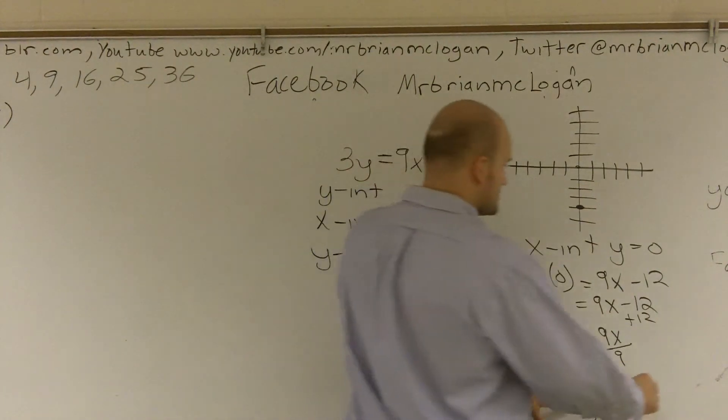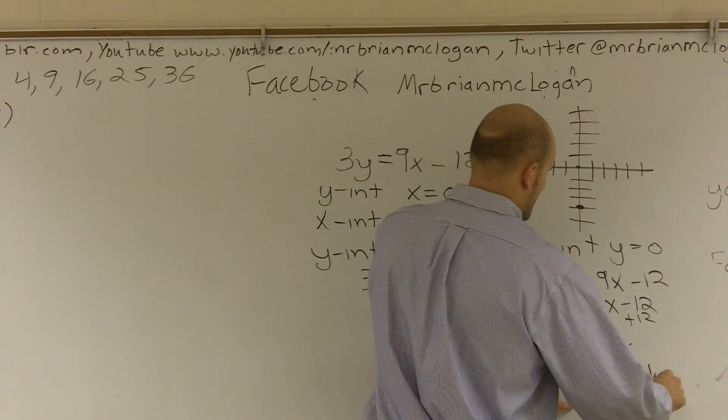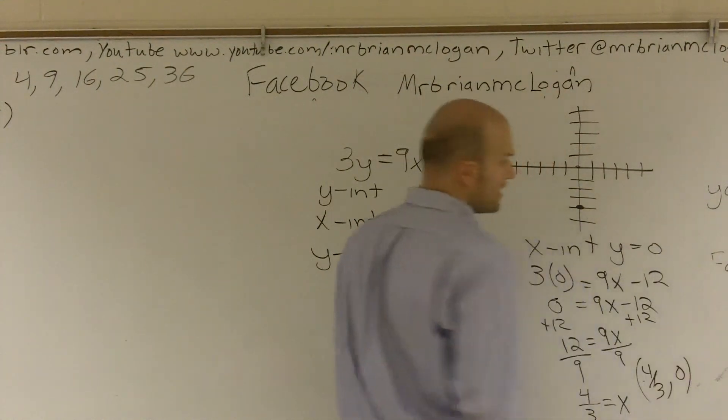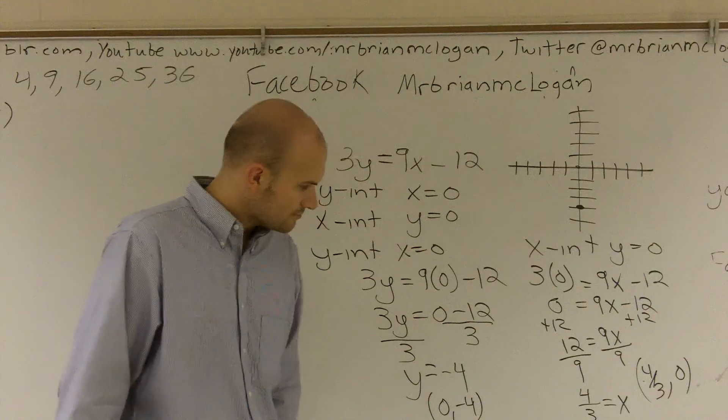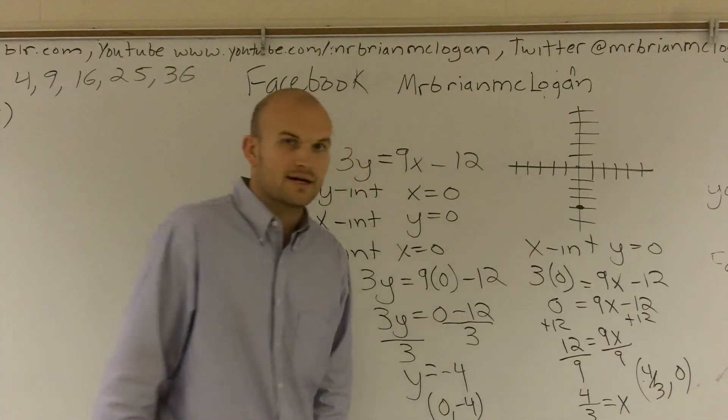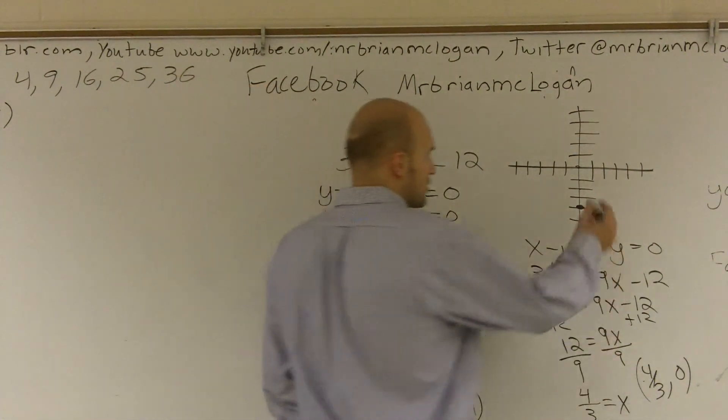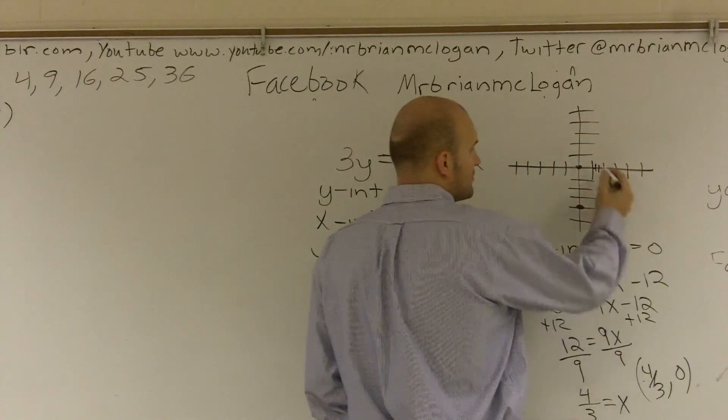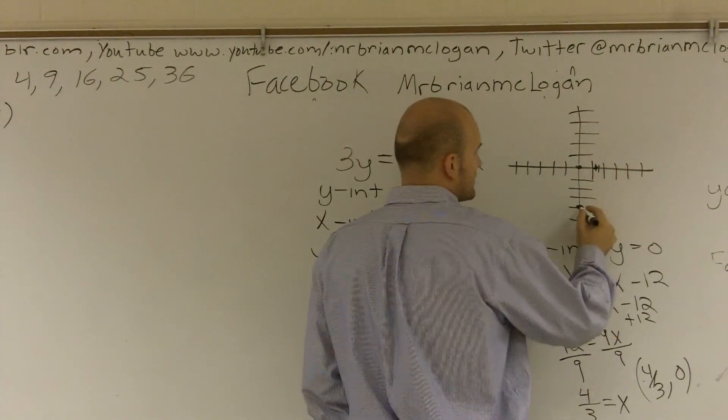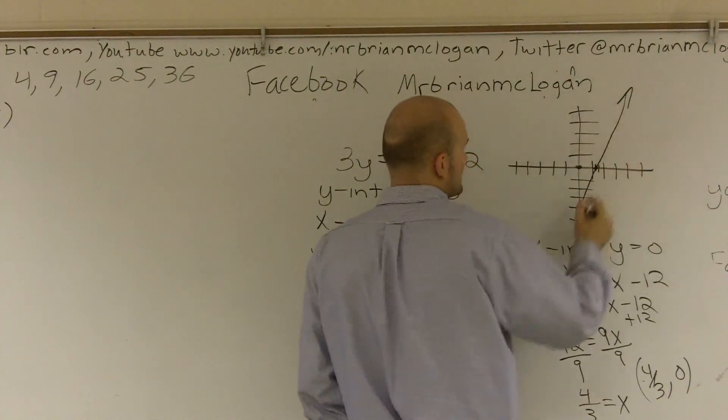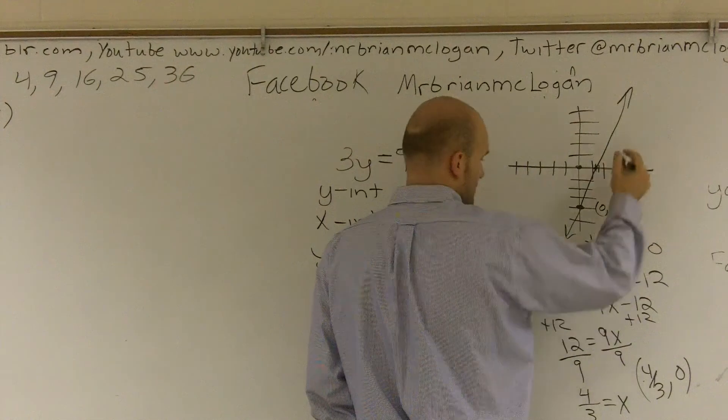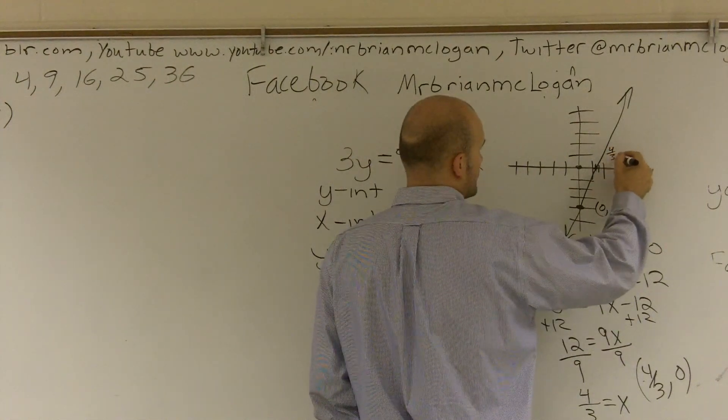Well this point, x is four thirds, comma, zero. And four thirds is the same thing like one and one third. So I'm going to go over one and then break that up into thirds to be my point. So if I connect those two lines, go out to infinity, I know that this point is zero, negative four, and this one's at four thirds, comma, zero.